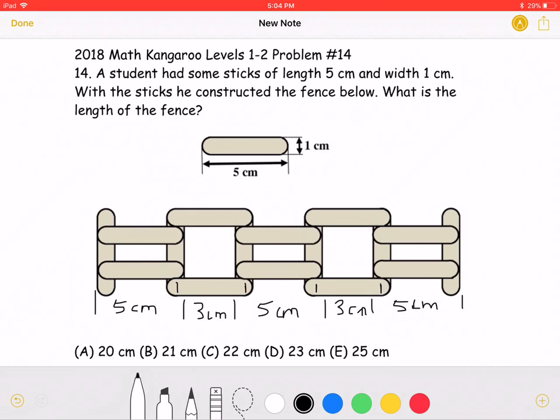Now, we must add the sum of these lengths. We have 5, plus 3, plus 5, plus 3, plus 5, which can also be written as 15, plus 6, which is a total of 21 cm.